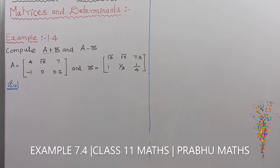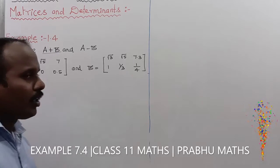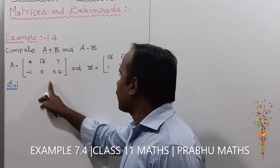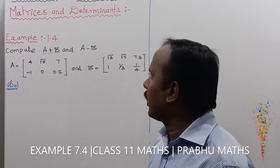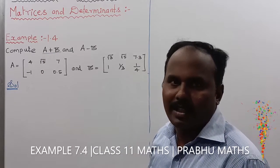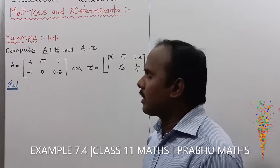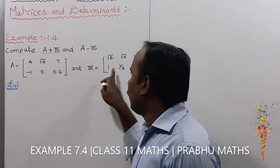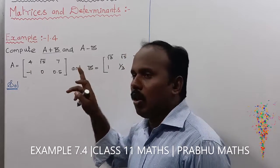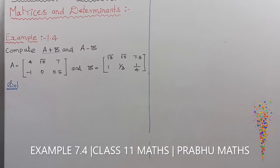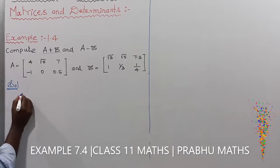Example 1.4: Compute A plus B and A minus B. The A matrix is a 2 by 3 matrix and the B matrix is also a 2 by 3 matrix. The addition property of matrices states that the two matrices must be of equal size for addition to exist.